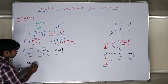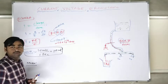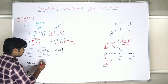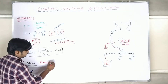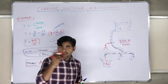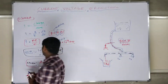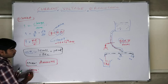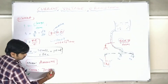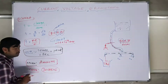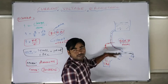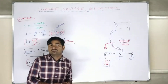For measurement: to measure current, we use an instrument called an ammeter. The ammeter should always be connected in series, because — like water flowing through a pipe — the current must flow through the meter itself to be measured. That is why the ammeter is connected in series.